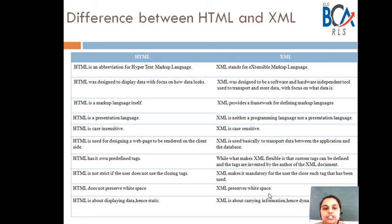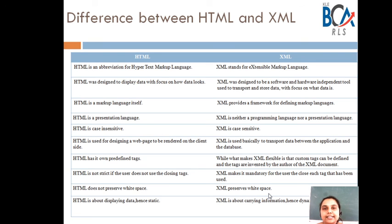The next difference is that HTML is not strict if the user does not use closing tags — if you forget a closing tag, that's fine. But XML makes it mandatory for the user to close each tag that has been opened. HTML does not preserve white space; if you want to preserve white space, you have to use the pre tag. But XML preserves white space. HTML is about displaying data and hence it is static — once you define it, it does not change. XML is about carrying data, and since data changes, it is dynamic in nature.